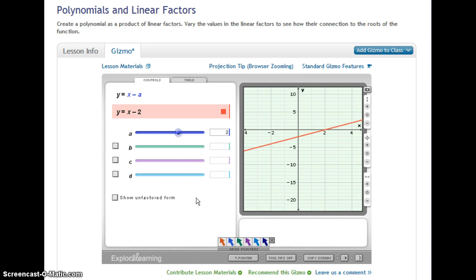To grab using these gizmos, we would have to select how many linear factors we want. So presently, it's only listing one linear factor.